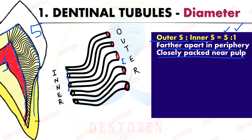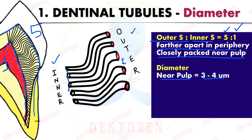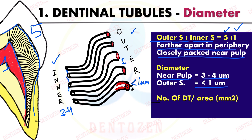It might seem that the diameter of the tubule is more on the outer side, but it is not. The diameter of tubules is more on the pulp side — three to four micrometers — whereas on the outer side it is less than or equal to one micrometer. This is because peritubular dentine, as it forms inside the dentinal tubule, reduces its diameter.